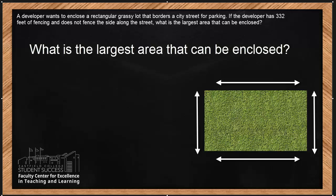However, the problem is telling us that one of the sides is going to border a city street for parking, and the developer does not want to fence the side along the street. Let's make this side along the street. You can make any side you want along the street. So this side will not be enclosed, but we do have the other three. I'm going to call this length and I'm going to call this width.